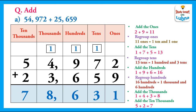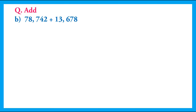So after adding fifty-four thousand nine hundred and seventy-two and twenty-three thousand six hundred and fifty-nine, we have got the answer: seventy-eight thousand six hundred and thirty-one.